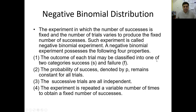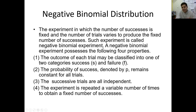In the negative binomial distribution, how you will identify that it is a negative binomial distribution and how you will use the negative binomial distribution function. The experiment in which the number of successes is fixed and the number of trials varies to produce the fixed number of successes — such an experiment is called a negative binomial experiment.